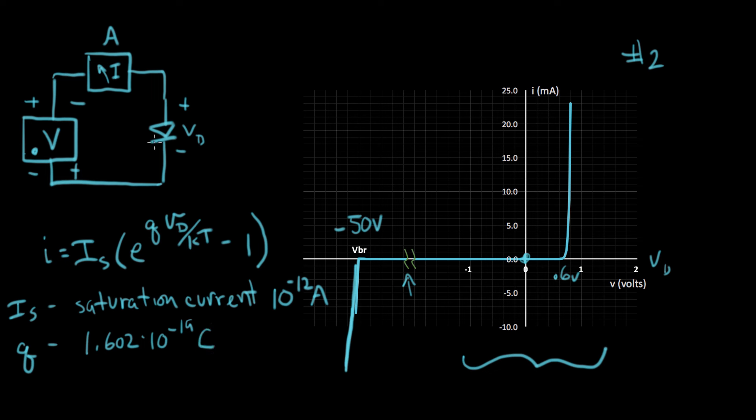VD is the voltage across the diode. K is Boltzmann's constant, that's a small k usually. That equals 1.38 times 10 to the minus 23 joules per Kelvin. And the last variable is T, and that's the temperature, measured in Kelvin with a big K. Kelvin is the absolute temperature scale. So zero Kelvin equals minus 273 degrees Celsius. Very, very cold.